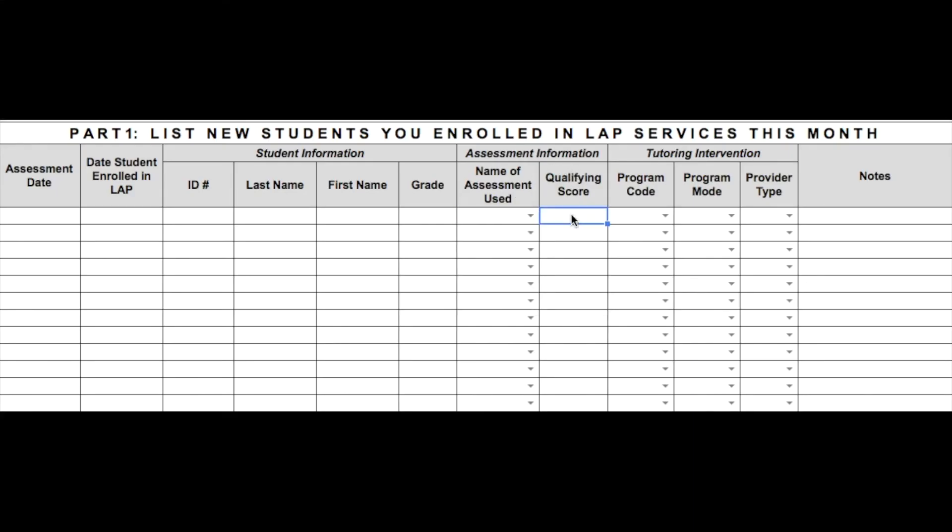Qualifying score is their IRR or estimated IRR level. If you are qualifying students based on WA Kids, their qualifying score will be below A.